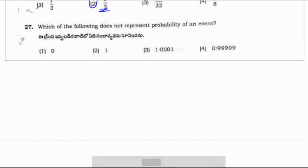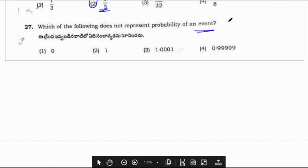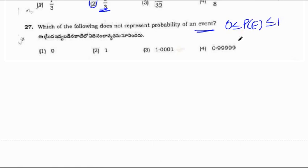Which of the following does not represent a probability of an event? So probability of any event will lies between 0 and 1 including 0 and 1. 0 is a probability. 1 is a probability. 0.999 is less than 1, it is a probability. But third option is not a probability because 1.0001 is greater than 1. So correct option for this question is option 3.